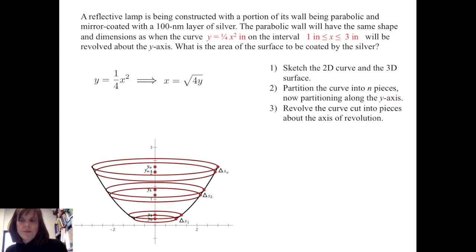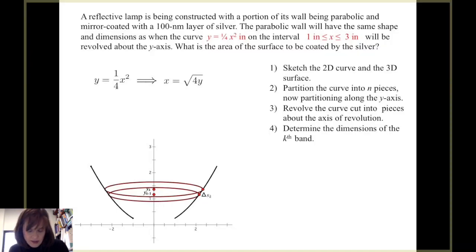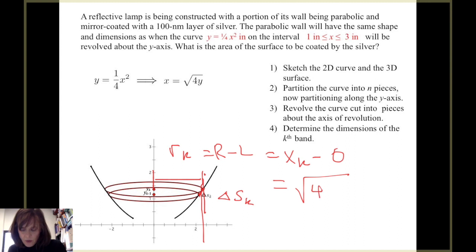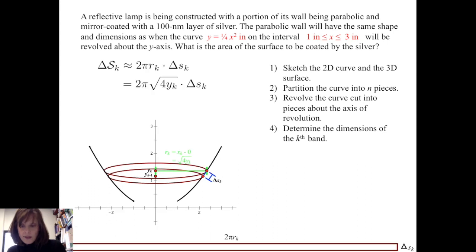I revolve those partition pieces of the curve about the axis of revolution, which is the y axis in this case. And I want to determine the dimensions of the kth band. So again, I'm going to think the same band that I had before. It has a radius r sub k and a width delta s sub k. This time, the radius, again, still right minus left, is x sub k minus 0, x equals 0. But x sub k is now the square root of 4y sub k. So there we see our radius. We see our delta s sub k. The dimensions of the approximate rectangle are approximately 2 pi times the square root of 4y sub k times delta s sub k.